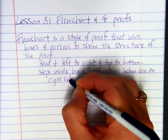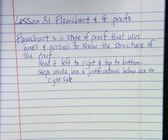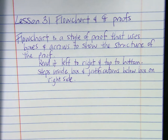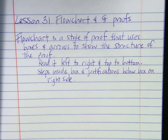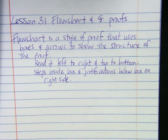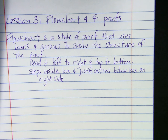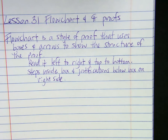Sometimes if it's a really long justification, like the converse of the corresponding angle theorem, you can write it under the whole box. But generally, we scoot it over to the right side. You can see in your book on example two they show a flowchart proof with arrows — from one step you go to the next, and usually the steps come together at the end of the proof.